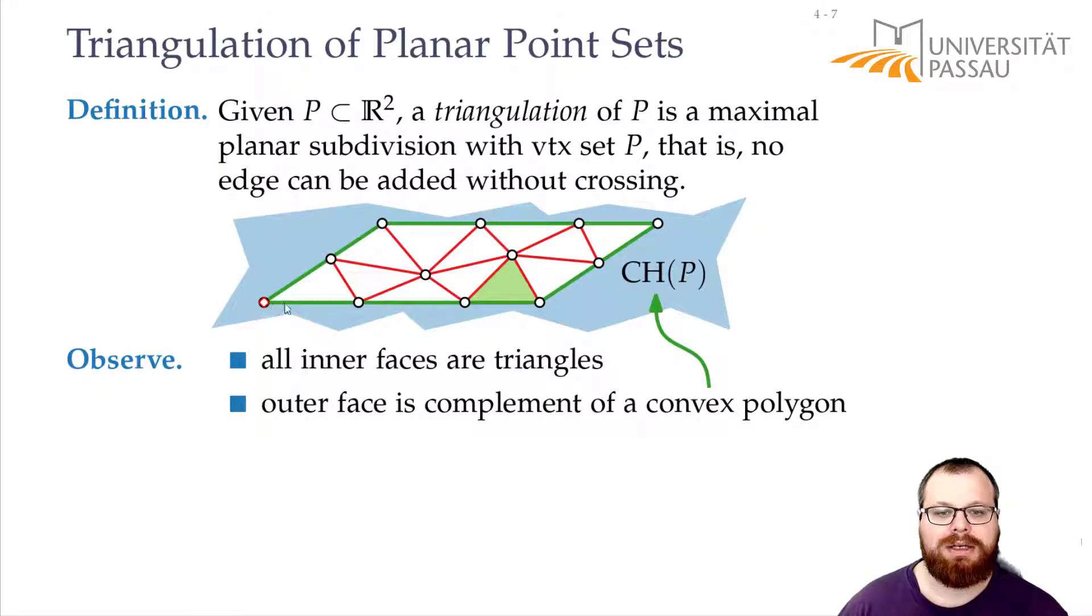The outer face of this is the complement of the convex polygon. If you look at the boundary here, this is a convex polygon, this is the convex hull of our point set. And everything that lies outside that is the outer face. And outside this convex polygon we cannot add any other edges without adding crossings.